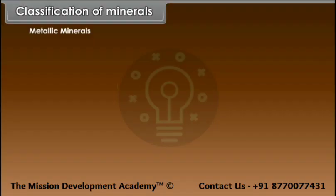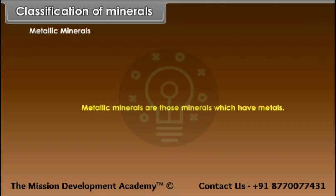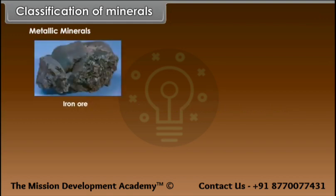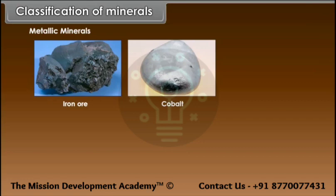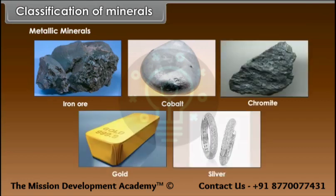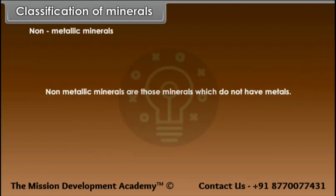Metallic minerals are those minerals which have metals. Examples include iron ore, cobalt, chromite, gold, silver, etc.